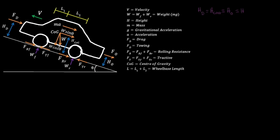We're going to call the total traction force FT — front and rear added together — and do the same thing for rolling resistance. The next step is to sum the forces in the X direction, assuming the direction we're headed is positive. So, force equals mass times acceleration: mass times acceleration equals the traction force (positive), minus the aerodynamic load, minus the rolling resistance, minus W sin theta, minus the trailer force.